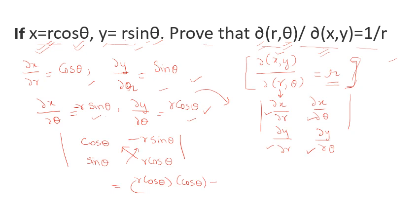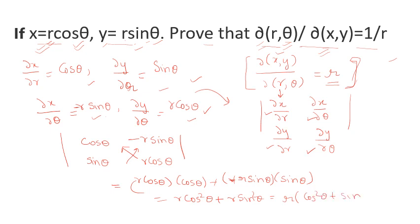Multiplying the other diagonal: minus r sine theta into sine theta. So we get r cos squared theta minus (minus r sine squared theta), which gives r cos squared theta plus r sine squared theta. Taking r common, we are left with cos squared theta plus sine squared theta, which equals 1. So the Jacobian ∂(x,y)/∂(r,θ) equals r, and inverting numerator and denominator gives us 1 by r, which is what we needed to prove.